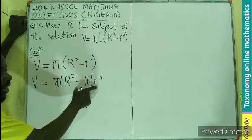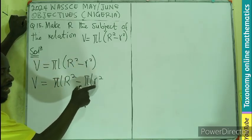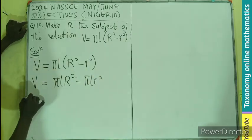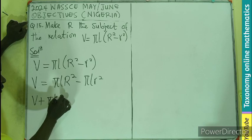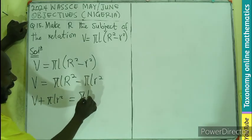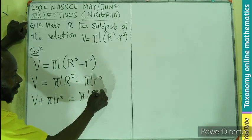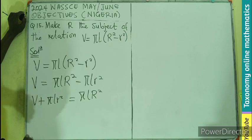We isolate this by adding π L r square to both sides, meaning V plus π L r square equals to π L R square.